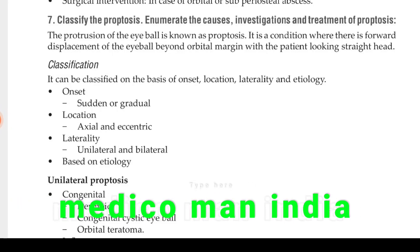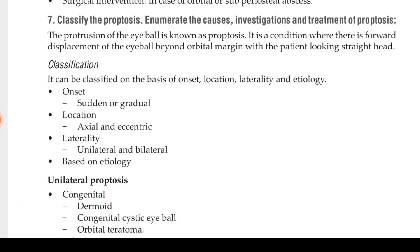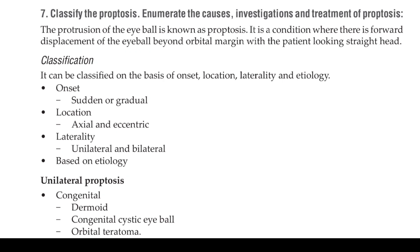We are going to see proptosis. Proptosis means forward falling — the protrusion of the eyeball. It is a condition where there is forward displacement of the eyeball beyond the orbital margin, with the patient looking straight ahead.